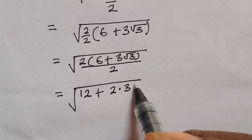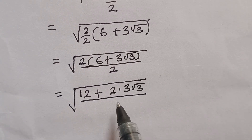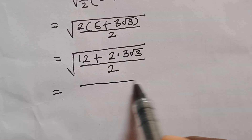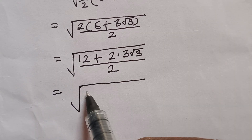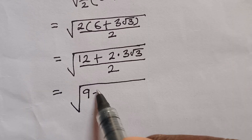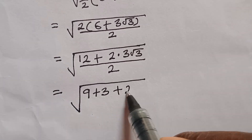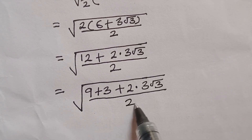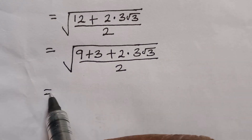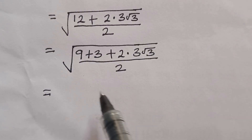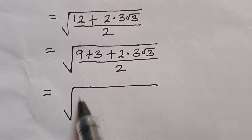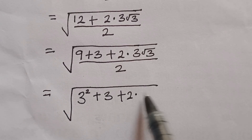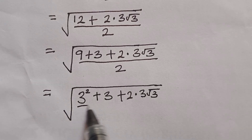So therefore I have square root of 12 plus 2 times 3 square root of 3, everything divided by 2. I can split 12 as 9 plus 3, so that I can find my way around the square root. So I have 9 plus 3 plus 2 times 3 square root of 3, everything divided by 2.